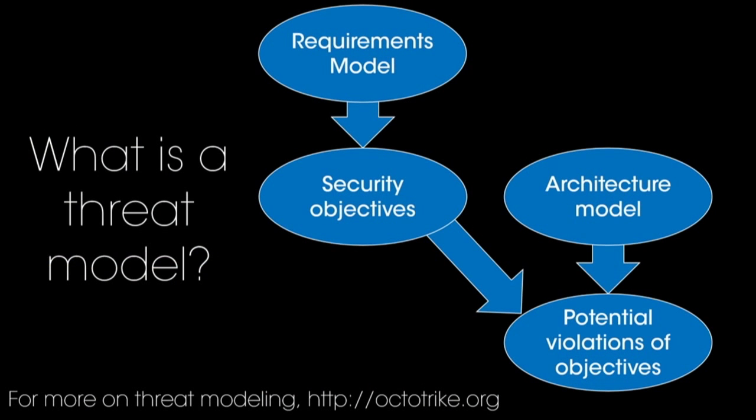A good threat model you can use to ask questions about how the system will work, at both the requirements level and at the architecture level. It gives you a model of the requirements of the system — what you're trying to do. It gives you a model of the architecture of the system — how you're trying to do those things. From the requirements model, you get the security objectives: how is this system supposed to function, how is it supposed to break, under what conditions should it respond in what ways to what kinds of malicious activities? And from the architecture model, you get all of the places where you might violate those security objectives.